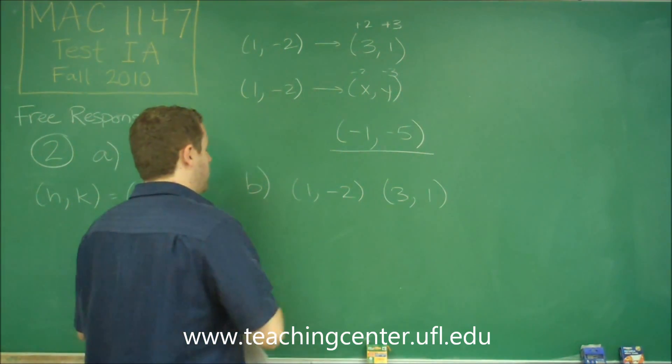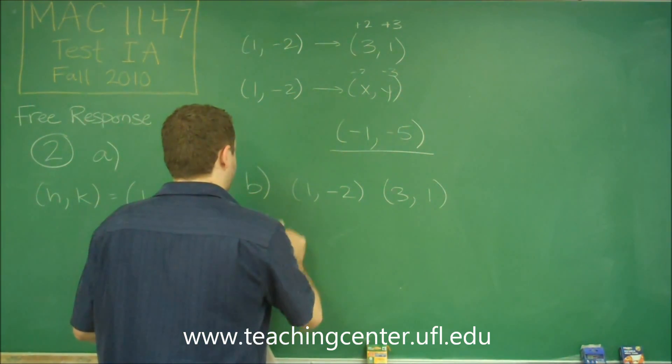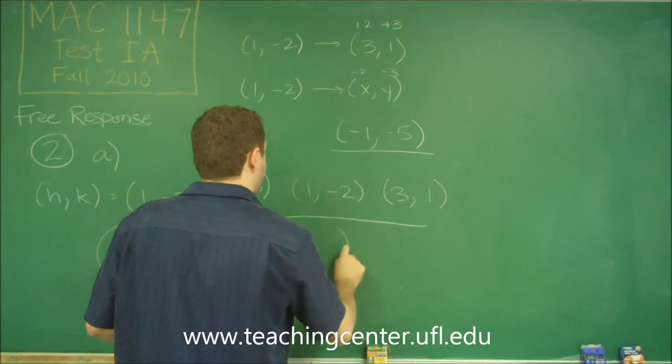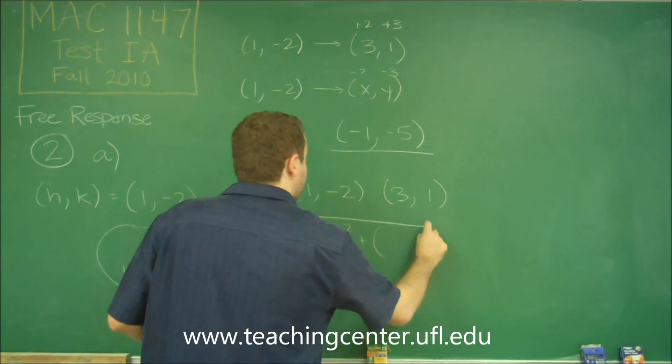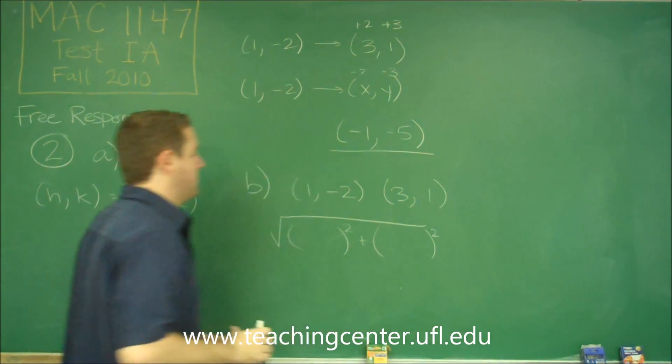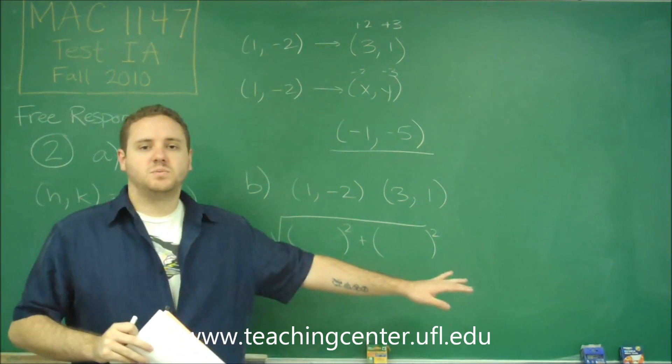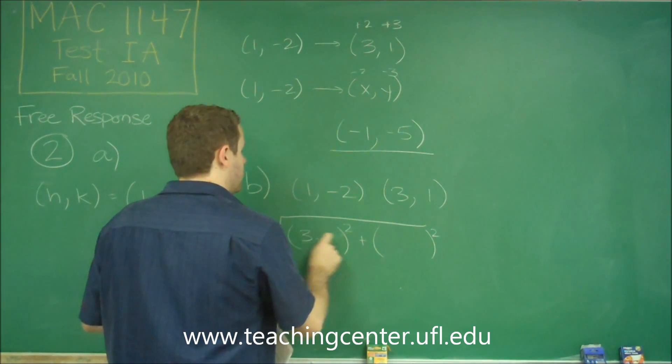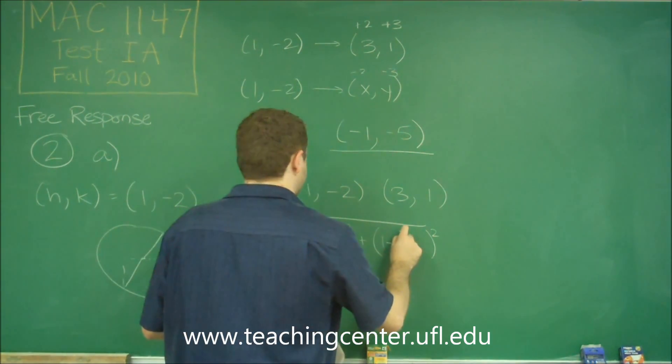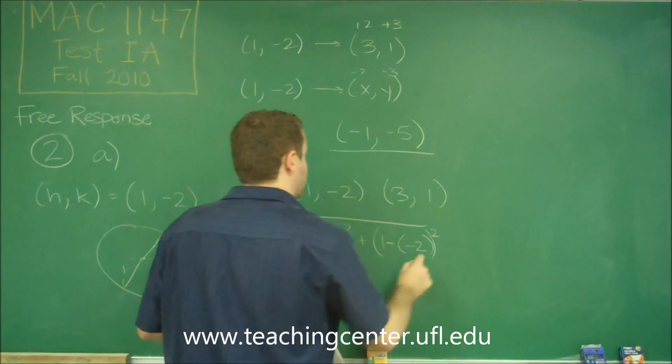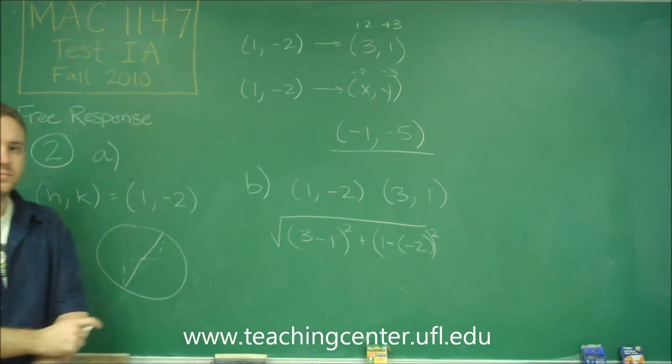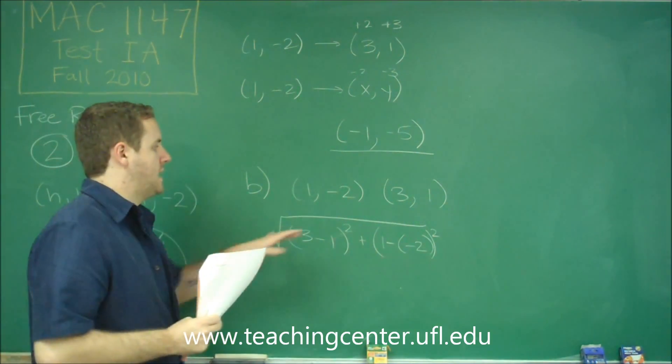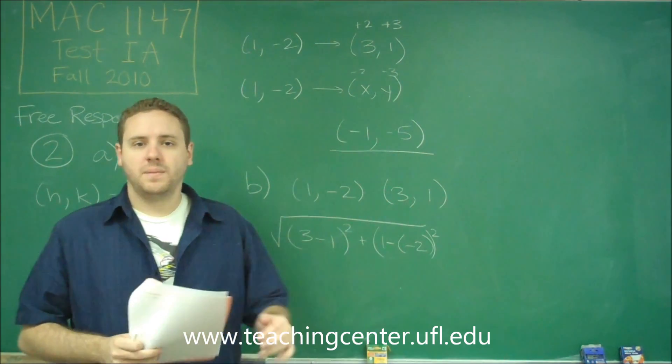So the distance formula, remember that you take the square root of, you square the difference between the x's and the difference between the y's. So the difference between the x's is 3-1. The difference between the y's is 1-(-2). If you want to just think about it as they're 2 apart and they're 3 apart, that's fine.